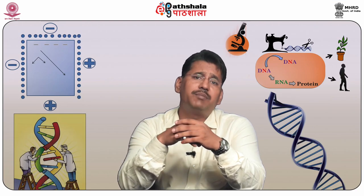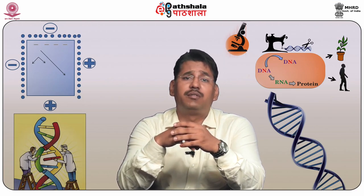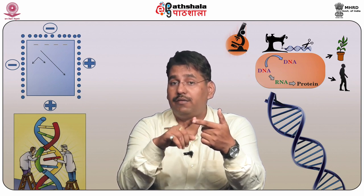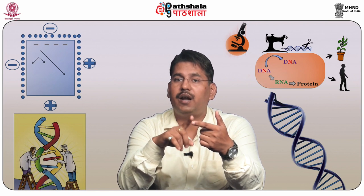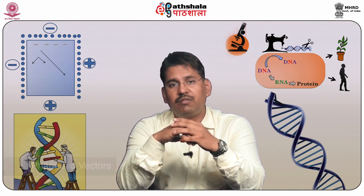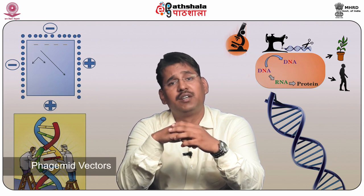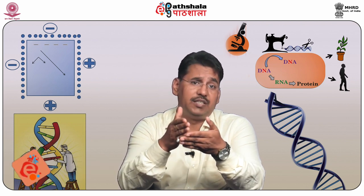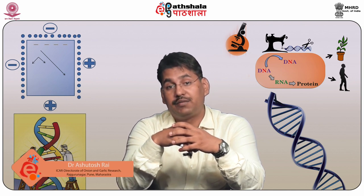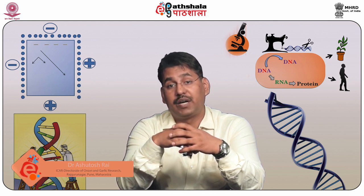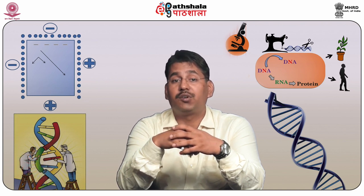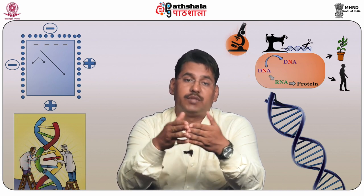In this module we have learned about single-stranded bacteriophages Ff, Fd, and F1; M13 vectors; phasmid vectors; replication in these vectors; and high cloning capacity vectors like BAC, P1-derived artificial chromosomes, and yeast artificial chromosomes. Thank you.